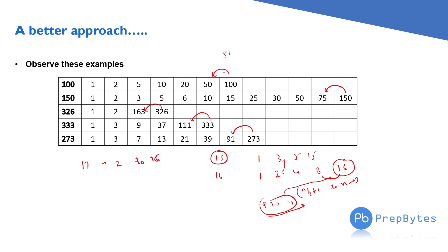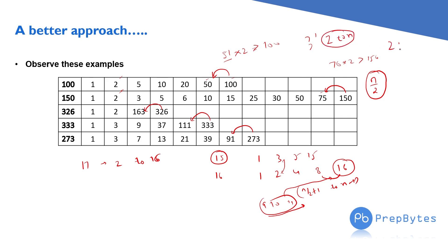After n/2, if a number is to be a divisor it must be multiplied by a small number, but no such small number exists. For example, 51 × 2 goes beyond 100, and we already know 2 × 50 = 100. Similarly, 75 × 2 = 150. So beyond n/2 we will not find any factors. Instead of looping from i = 2 to n, we can loop from i = 2 to n/2.